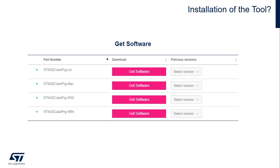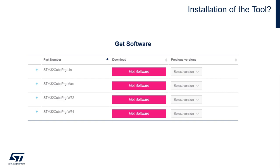And then the last two will be the Windows-based, Windows 32 or Windows 64. You can even download and install previous versions of the STM32 CubeProgrammer using the Select Version buttons.